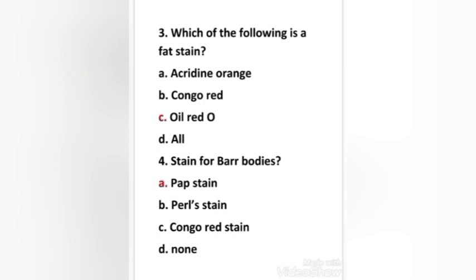Next question: stain for bar bodies — Pap stain, Pearl stain, Congo red stain, or none? The right answer is option A, Pap stain. The bar body is an inactive X chromosome; it appears as a dense dark-staining spot at the periphery of the nucleus of each somatic cell in the human female. Special stains for the nucleus such as Pap-Nicolas stain, Feulgen, and Guard stain, or haematoxylin and eosin, cresyl violet, and fluorescent staining are used to visualize them.